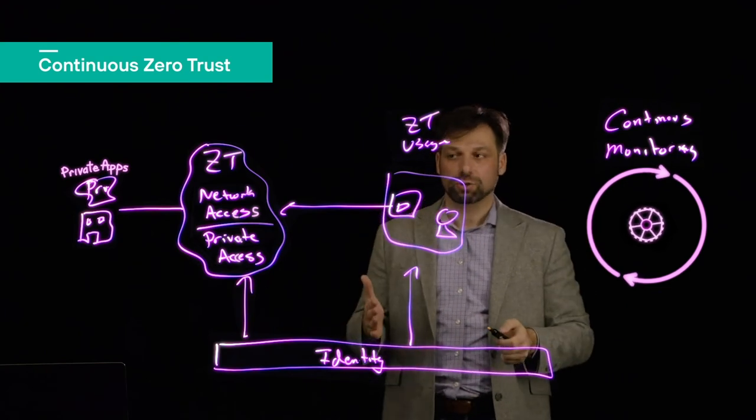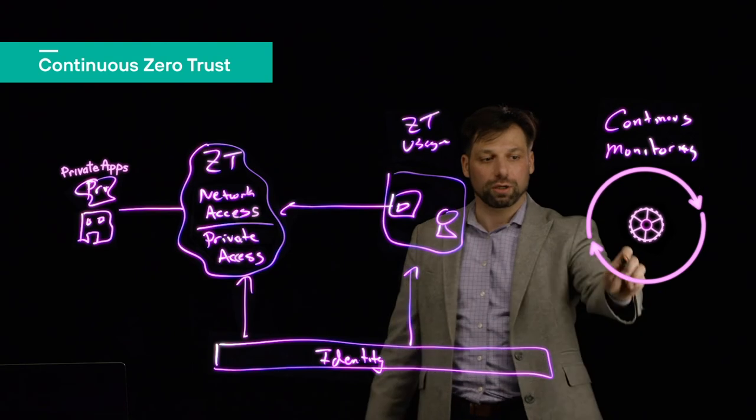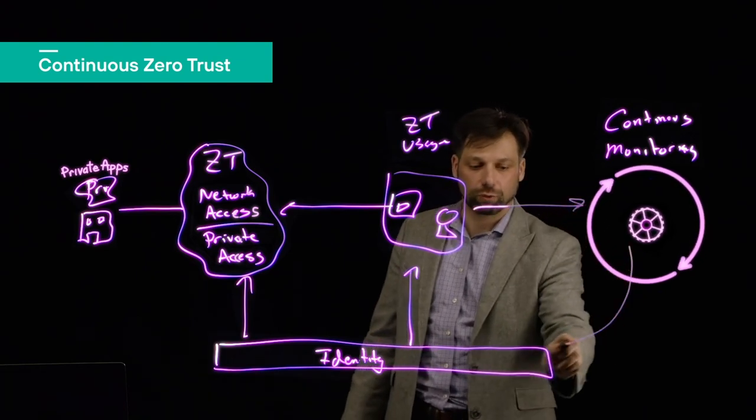We're using identity to not only control network access and understand usage, but monitoring that usage can inform our continuous monitoring and then continuous monitoring can inform identity.